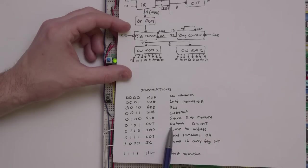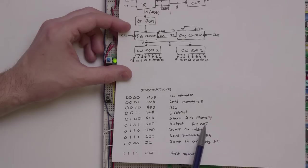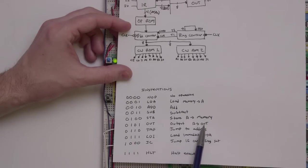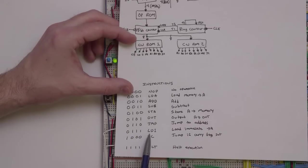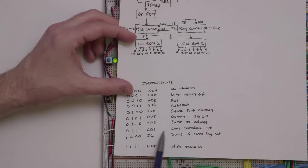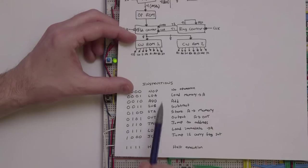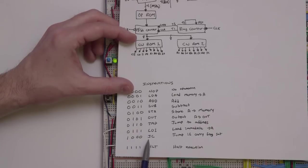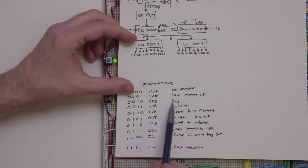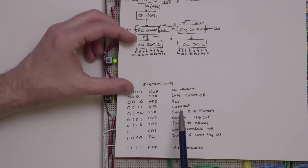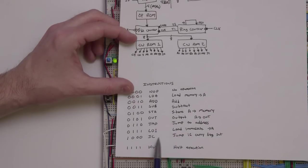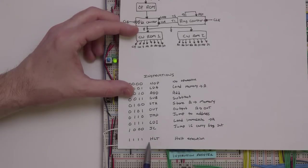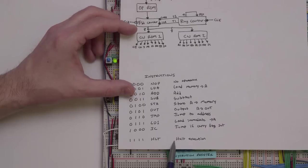The output command takes whatever's in the A register and puts it on the display — this is how we get output from the computer. There's also a jump instruction and a jump carry instruction. The jump instruction allows us to create loops in our program. Jump carry creates a loop only if the carry flag is set — so if the result of the last addition was an overflow, it'll jump; otherwise it won't. This lets us create conditional logic in our programs. The halt instruction halts execution at the end of the program.